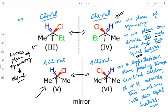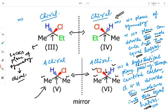Look at this molecule: the central carbon here is attached to two identical methyl groups. A hypothetical plane passing through the central carbon, the chlorine, and the hydrogen divides this molecule into two equal halves. It has a plane of symmetry, which means this molecule is achiral — it will not be chiral.